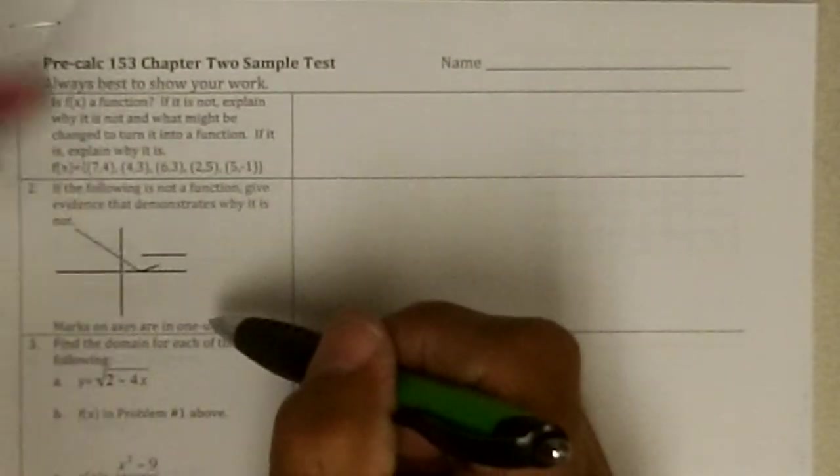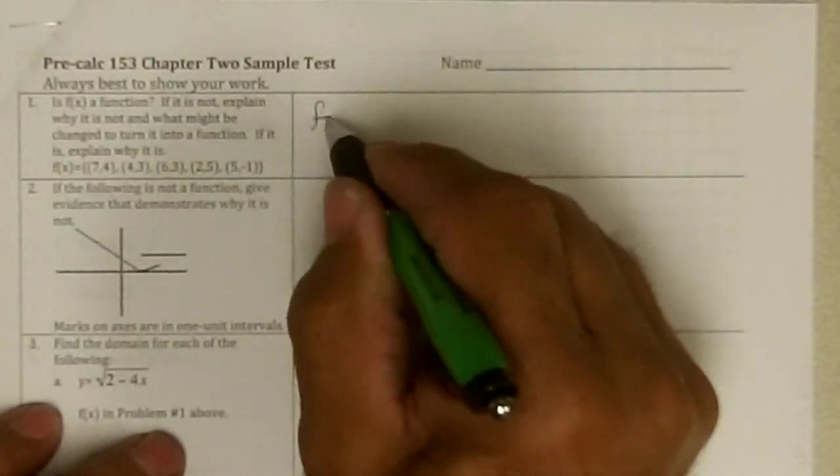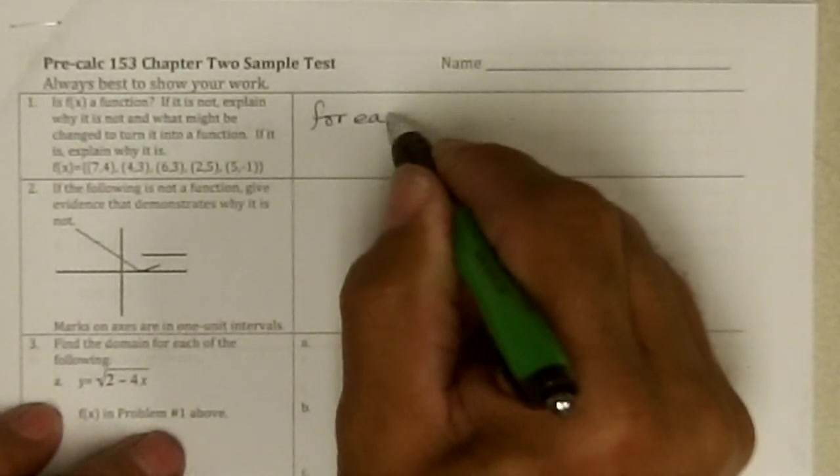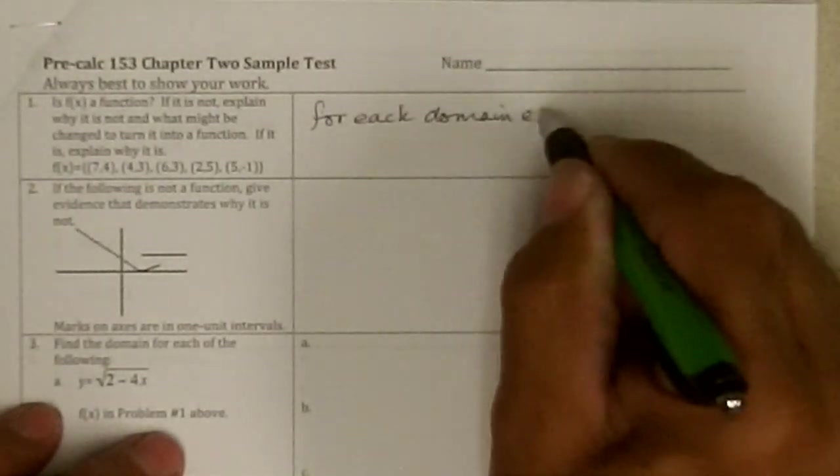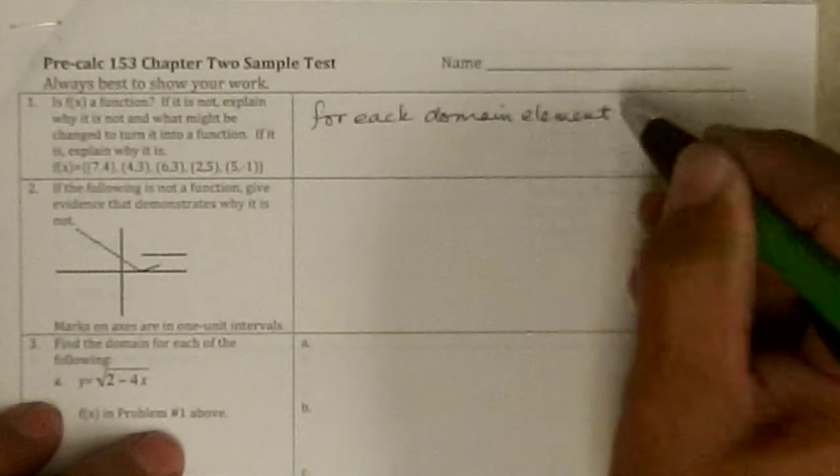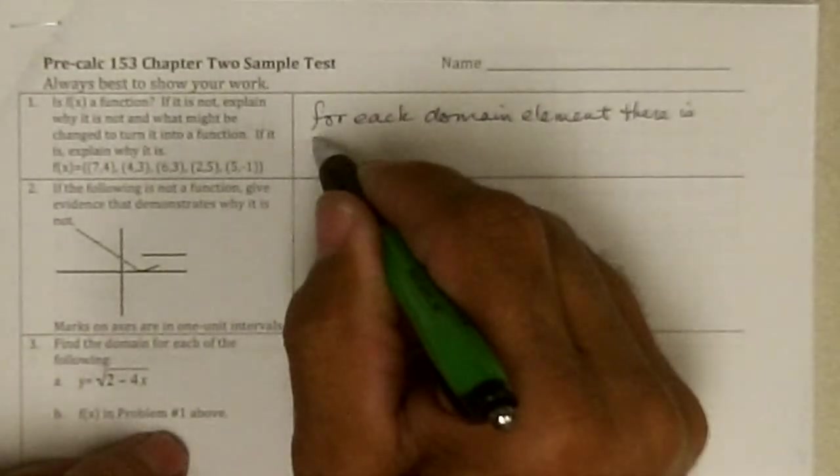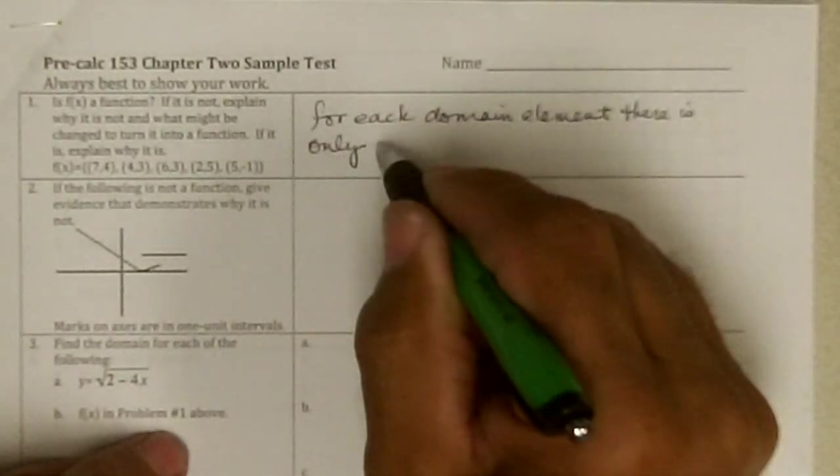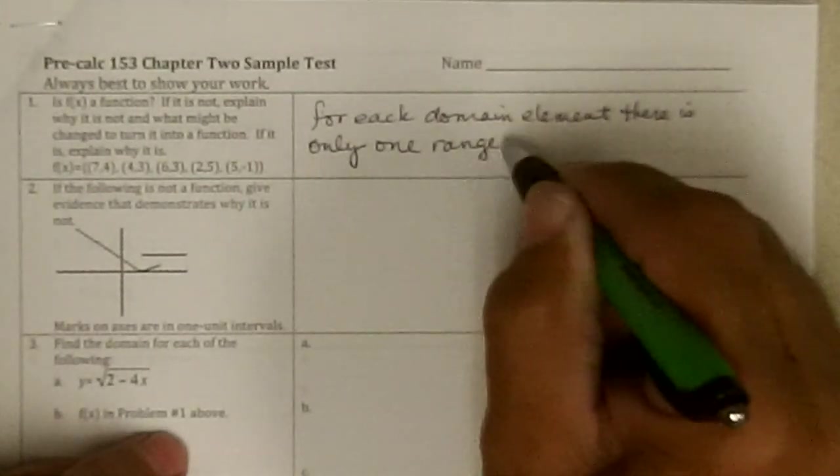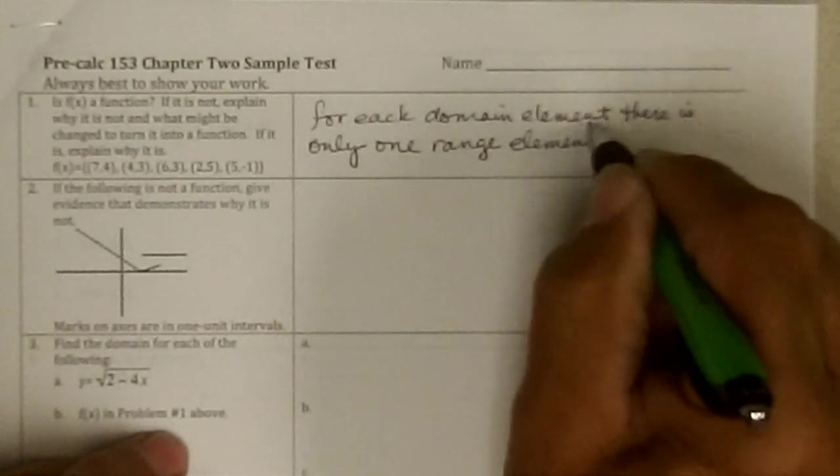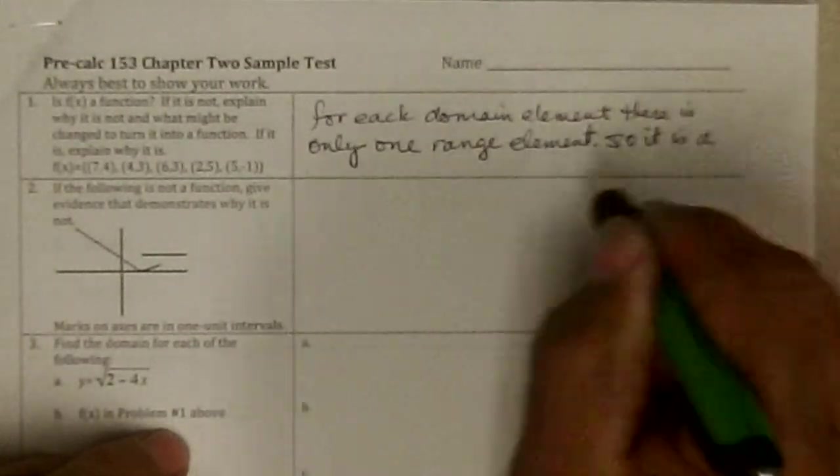And 5 is mapped to minus 1, not any other number. So for each domain element, there is only one range element. So it is a function.